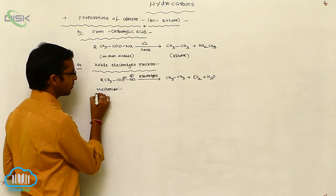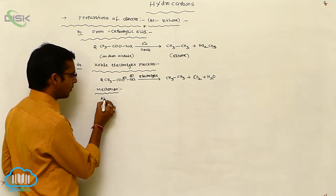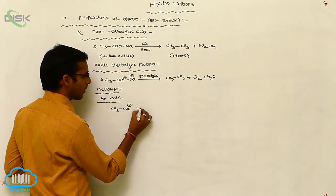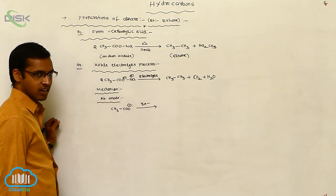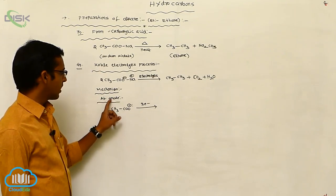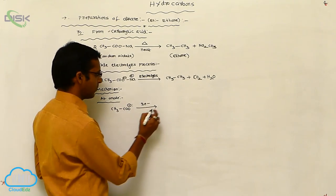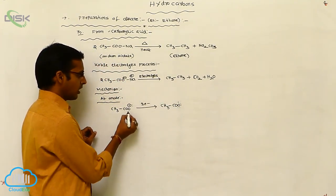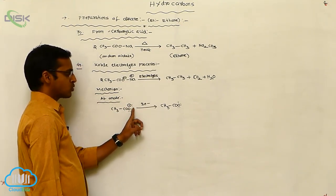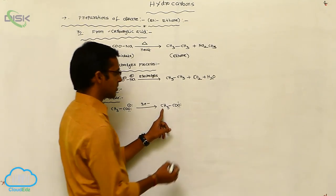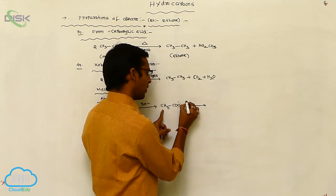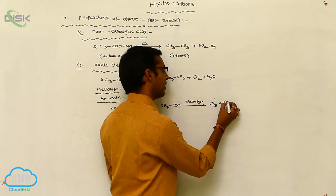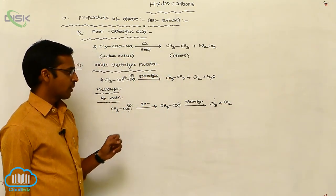During the electrolysis process, we use two types of electrodes: anode and cathode. At the anode, CH₃COO⁻ loses two electrons — because loss of electrons is called oxidation, which always occurs at the anode electrode. Losing two electrons converts CH₃COO⁻ to CH₃COO radical, containing an odd number of electrons. This then undergoes electrolysis and initially gives a methyl radical (CH₃•) and carbon dioxide (CO₂).